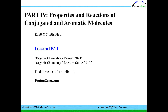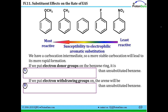Welcome back everyone. I'm Dr. Rhett Smith for ProtonGuru.com. Today we're studying lesson 4.11, and in this lesson we'll talk about what influence the substituent already present on a benzene ring might have on the rate that an electrophilic aromatic substitution reaction has.